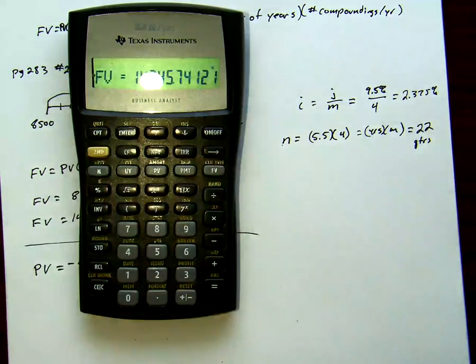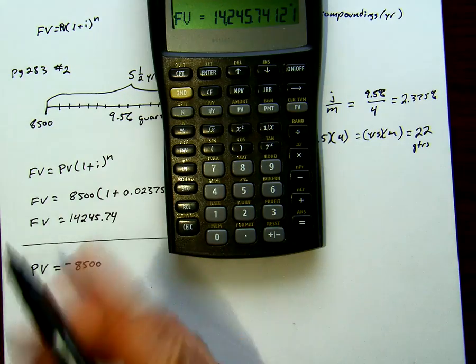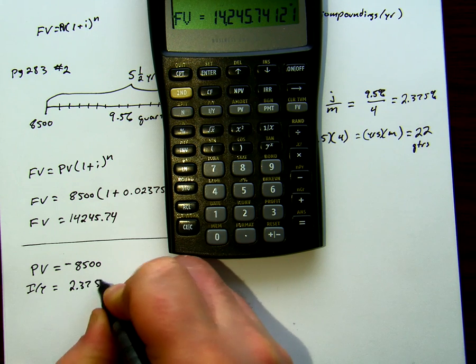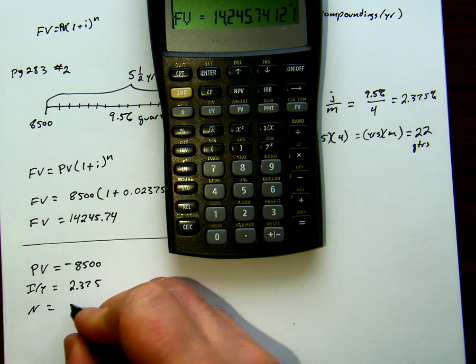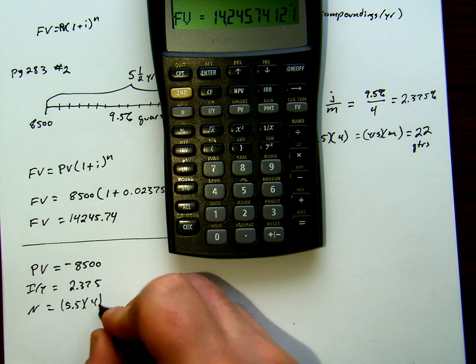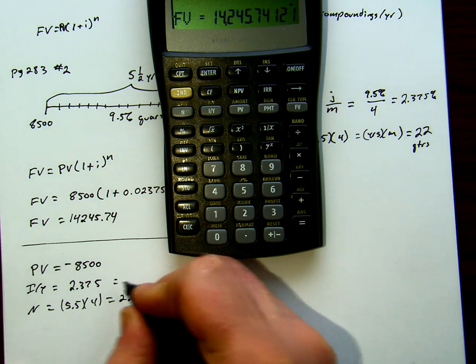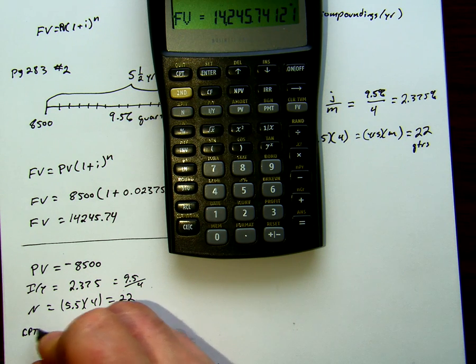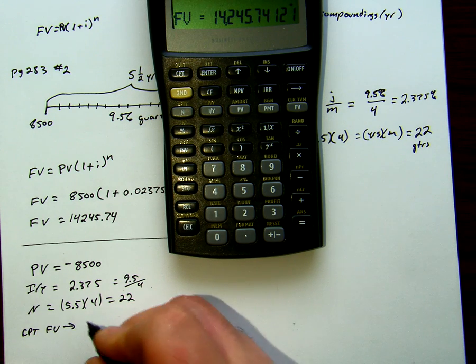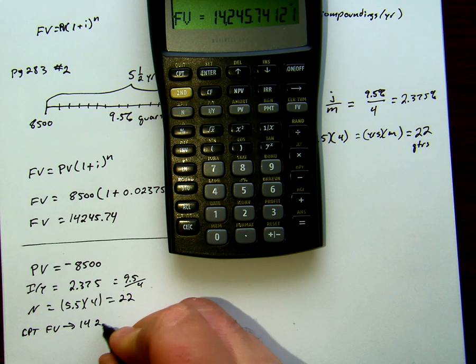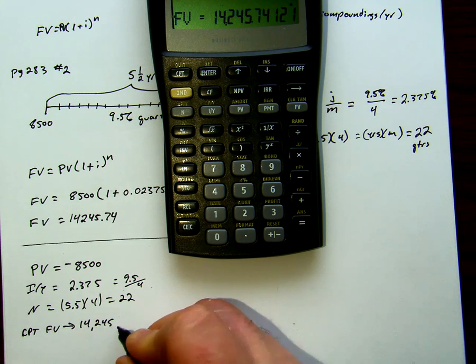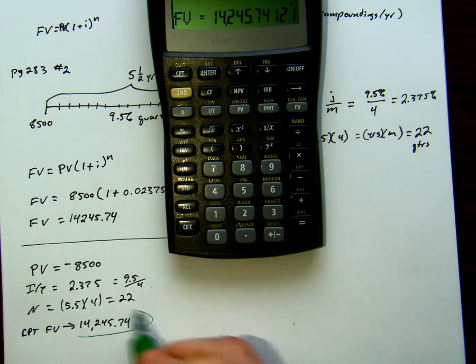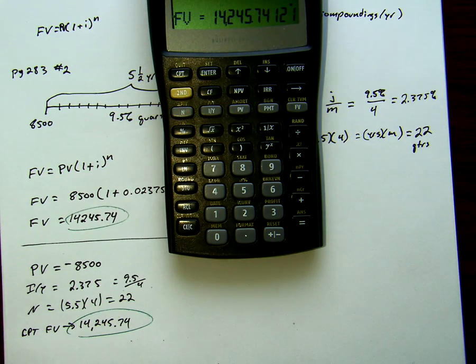Now we're just going to compute a future value. So our i per y was 2.375, our n was 5.5 times 4, which was 22. And we're going to compute the future value to be 14,245.74, exactly the same value that we had up here using the formula.